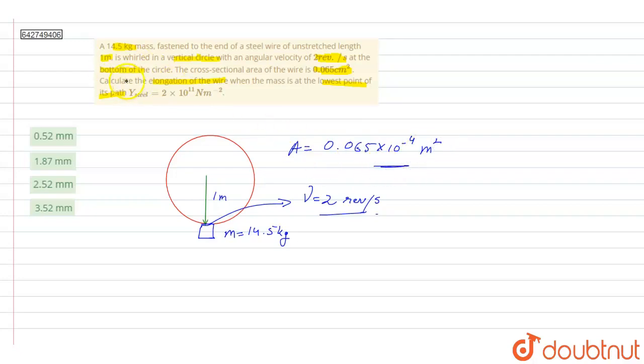Now we are to calculate the elongation of wire at the lowest point of its path. When the mass reaches the lowest point, at this point we can see that the forces acting on the wire due to which elongation will happen are mg weight of the mass plus, as the wire is rotating in a circle, m r omega square.